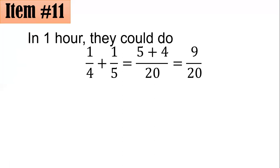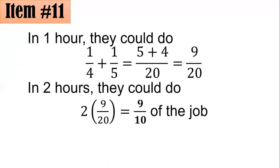But since they will be working for two hours, the problem is asking what work portion they can do in two hours. So we have to multiply this by 2. And with such, 2 divided by this one, their GCF is 10, so it will become 9/10ths. Hence, they could do 9/10ths of the job in two hours. Letter C.